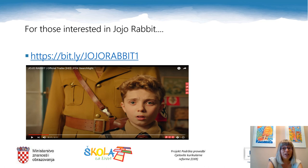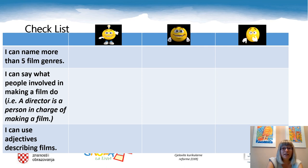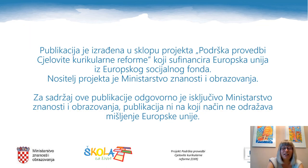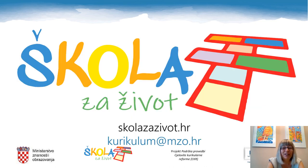After watching it, I hope you'll be interested in the film even more. As you can see, we are at the end of today's lesson and it's time for self-evaluation. In this checklist there are three statements: I can name more than five film genres; I can say what people involved in making a film do, for example, a director is a person in charge of making a film; and I can use adjectives describing films. So, think and tick the correct column please. I hope that you liked today's lesson and that you'll soon have a chance to suggest someone: how about going to the movies? Thank you for your attention and until we meet again, bye bye!